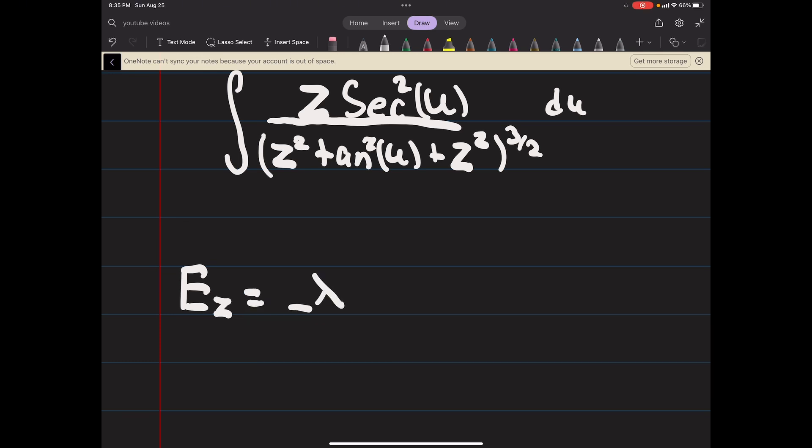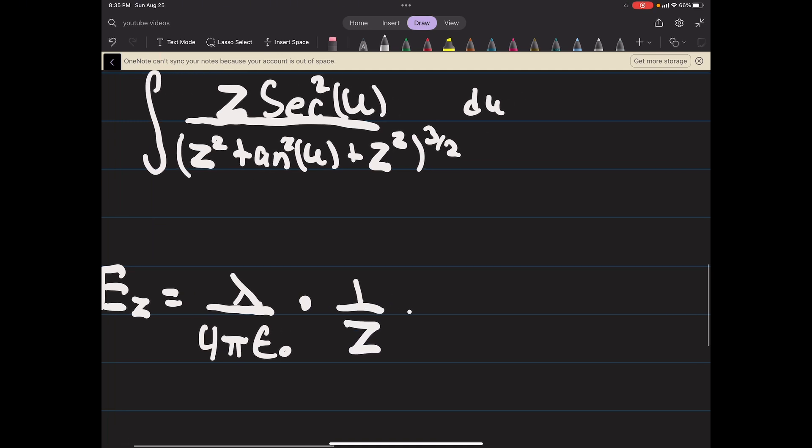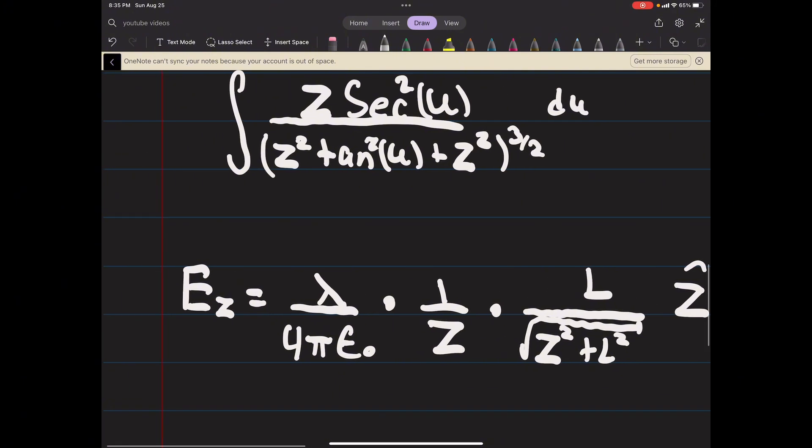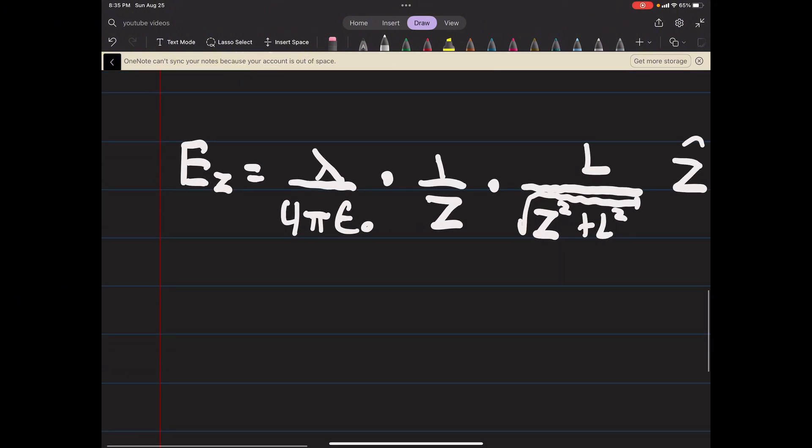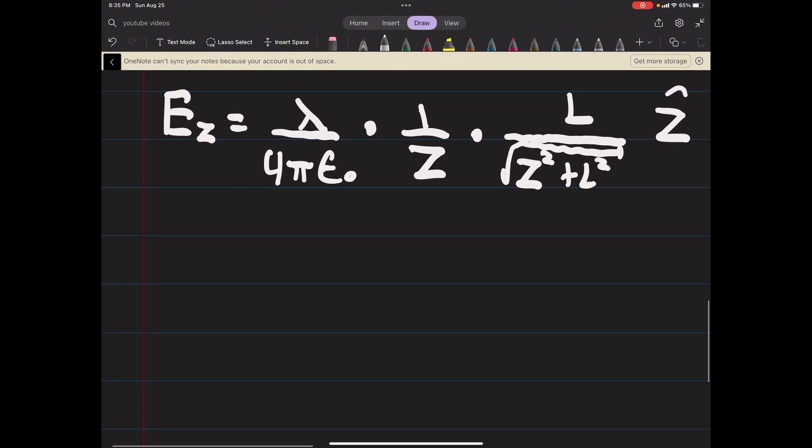What you should get is 1 over 4 pi epsilon naught times 1 over z times L over the square root of z squared plus L squared in the z hat direction. You could probably look up one of these integrals or do what you would like.